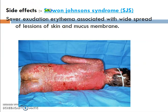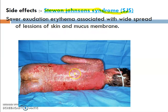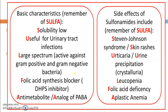Stevens-Johnson syndrome is the last important side effect — a severe exudative erythema associated with widespread lesions of the skin and mucous membranes. This is a main side effect of sulfonamides.